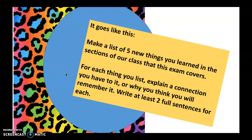I tell the students to make a list of five new things that they've learned in the section of the class that the exam covers - the unit or the lesson, whatever section the exam goes over. For each thing that they list, they should explain a connection that they have to it or why they think they will remember it. I ask them to write at least two full sentences for each.